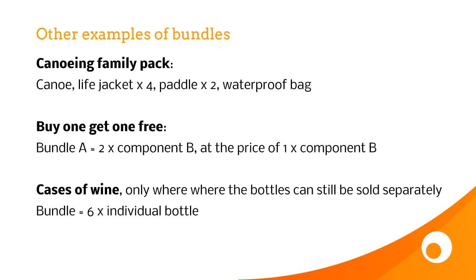Other examples of bundles include the Canoeing Family Pack, which shows that you can have a number of different quantities of components — a canoe, four life jackets, two paddles, and a waterproof bag. We've also got the concept of buy one get one free, which can be a bundle: pricing a bundle of two of component B at the price of one. And cases of wine, where you're selling a bundle of six bottles, but because the bottles can still be sold separately, it's a bundle.